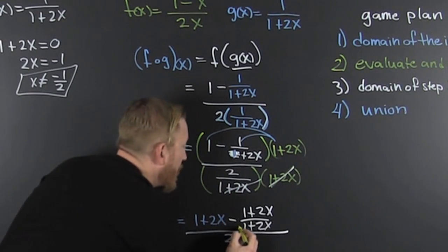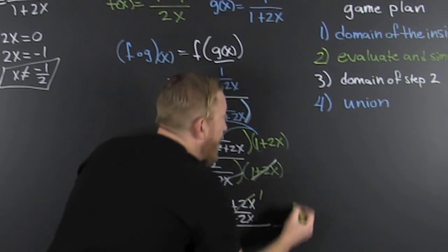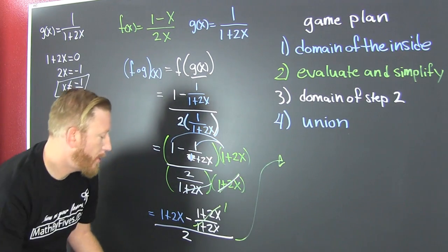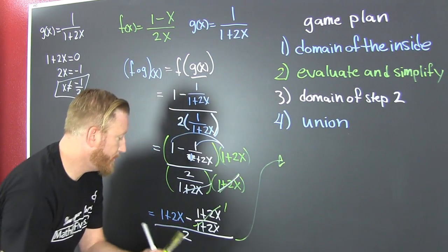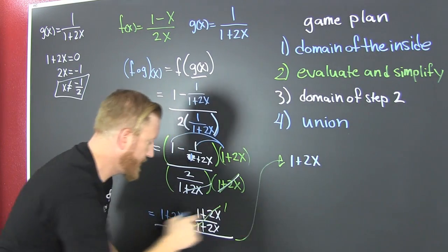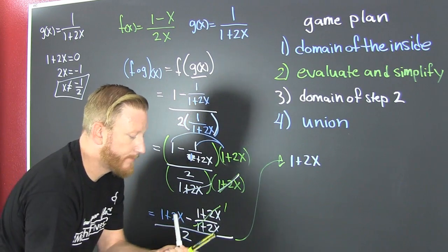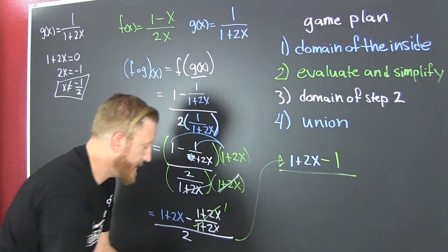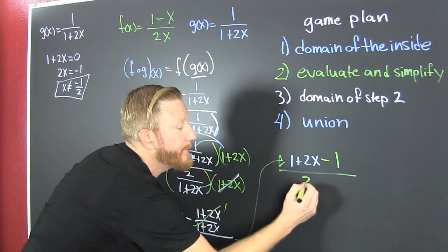Now before we say goodbye to that problem, I need to go and I need to clean it up. I'm going to call that one 1. So then I take it right here. That blue part, that's that 1 plus 2x minus that 1 minus that 1, it's all over that 2.